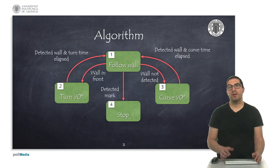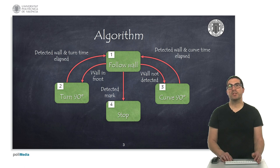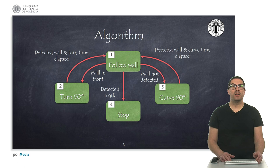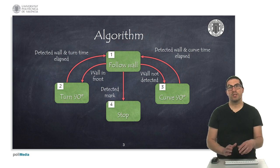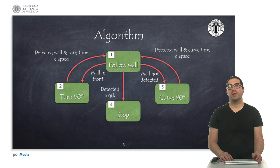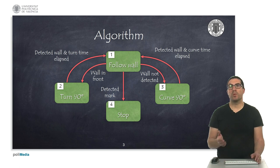As explained in the previous video, the algorithm has four states. In the first state, the robot must follow the wall. From this state, it could happen that we need to make a turn. This is a pure rotation if we detect a wall in front of the robot, or make a 90-degree turn if we stop detecting the wall that we were following on the side.